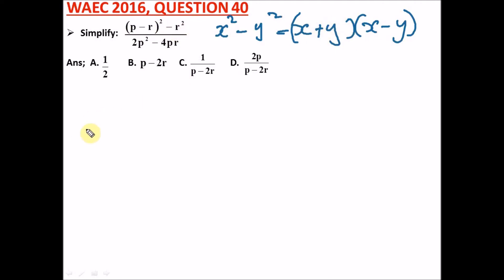So we have here p minus r plus r, brackets, then open our bracket, we're going to have p minus r, then we have minus r, divided by 2p squared minus 4pr.